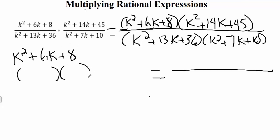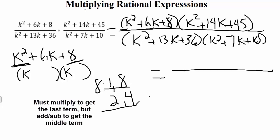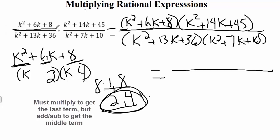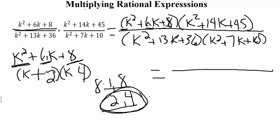We have two or more terms, so we use a factoring technique. No greatest common factor, no variable in all terms, so we go straight to reverse FOIL. Drawing our parentheses: k² gives us k times k. For the last term, 8, we consider 1 × 8 or 2 × 4. We need the pair that adds to 6, which is 2 and 4. Everything is positive, so we get (k + 2)(k + 4).